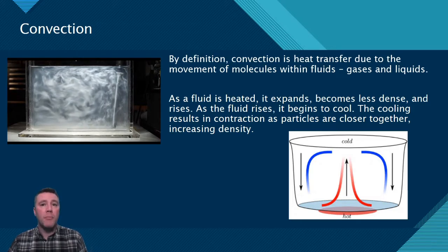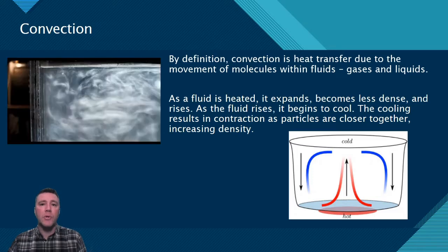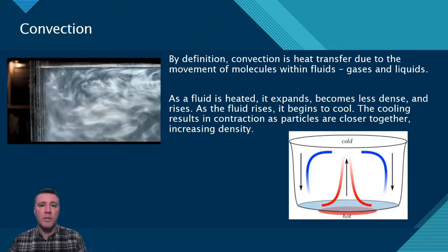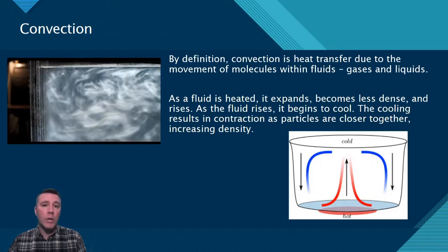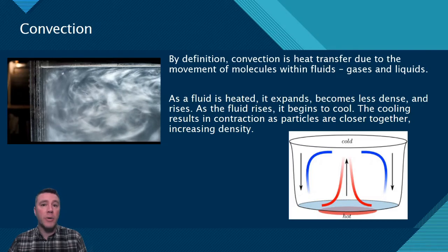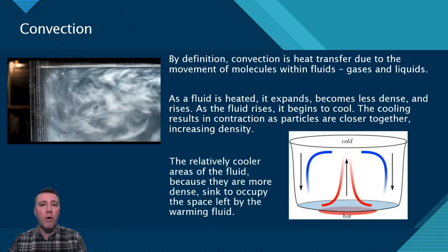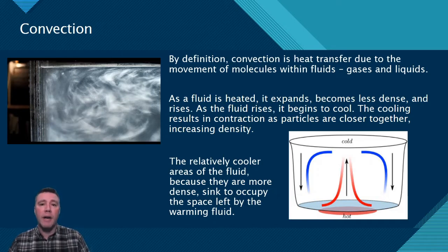The portion of the fluid that now has a lower density than the rest begins to rise. Rising and moving away from the heat source results in a reversal of the process — cooling, contracting, increasing density. The fluid sinks back down to occupy the space being left by the warming, rising portion of the fluid. This cycle of heating and rising, coupled with cooling and sinking, is referred to as a convective current.